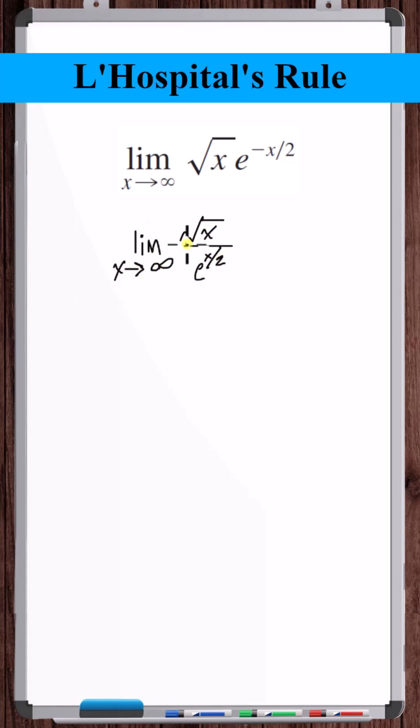Now plugging in infinity, square root of x goes to infinity, e to the x over 2 goes to infinity. This is an indeterminate form of type infinity over infinity.